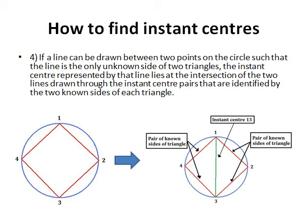Step 4: If a line can be drawn between two points on the circle such that the line is the only unknown side of two triangles, the instant center represented by that line lies at the intersection of the two lines drawn through the instant center pairs that are identified by the two known sides of each triangle.